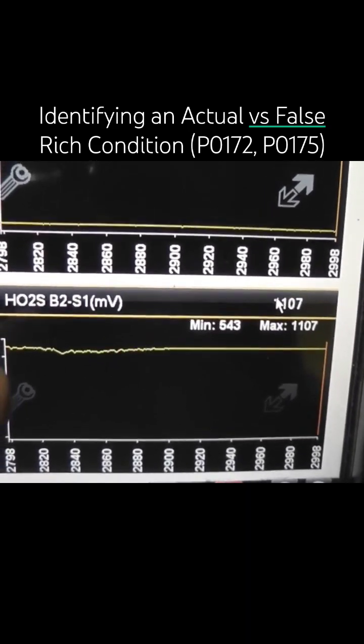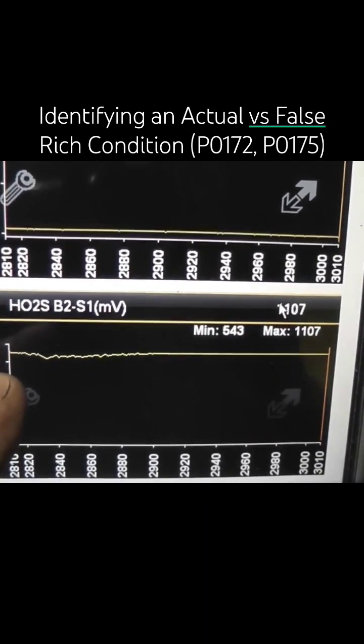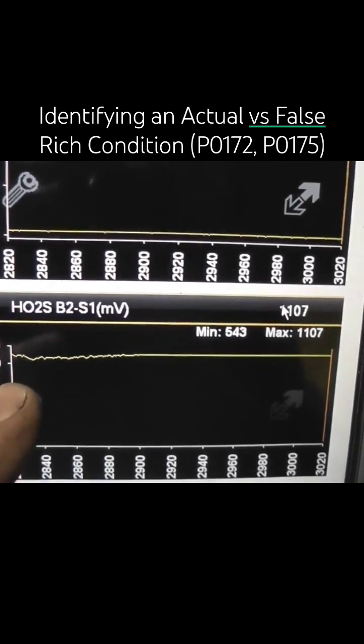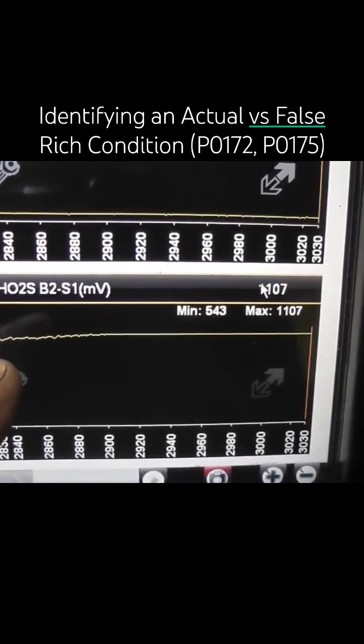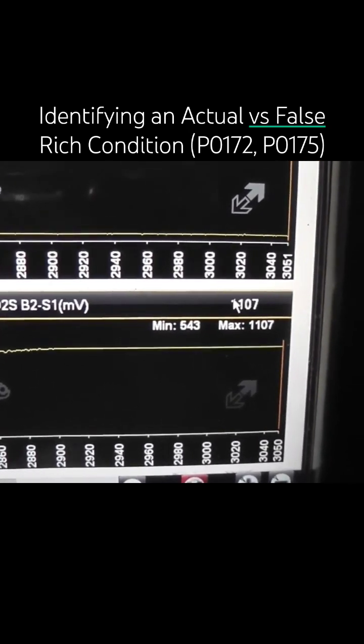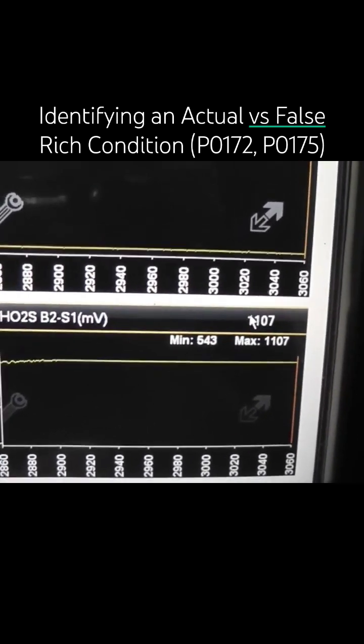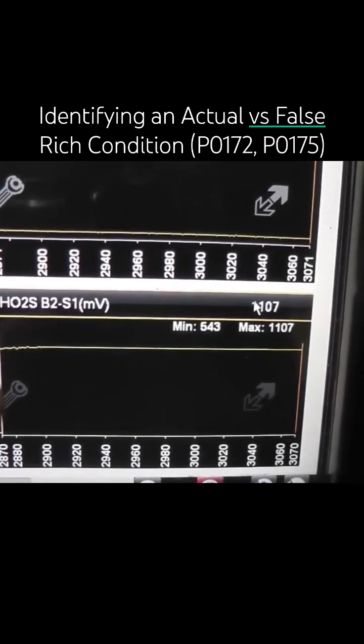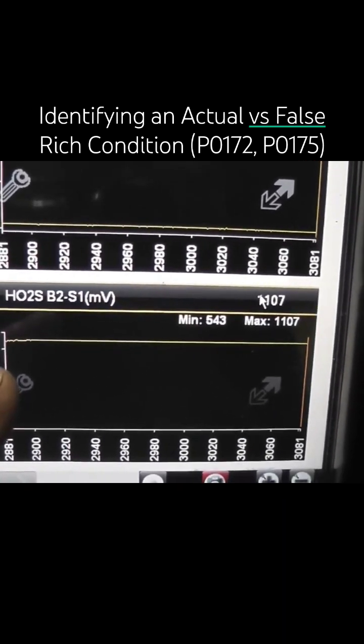That leads us to believe that this upstream sensor is faulty, and this is a false rich. This matches our symptoms of low power, runs good cold, runs good wide open throttle - the computer's taking away all the fuel on bank two from a bad upstream O2 sensor.